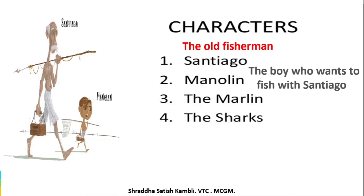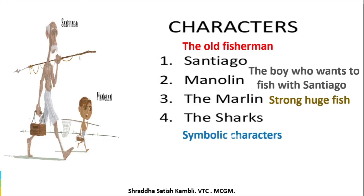Now who is Marlin? Marlin is nothing but a big, strong, huge kind of fish. And finally there are the sharks. Now the sharks here are symbolic characters — they are the ones who try to keep you away from your goal, who try to destroy you basically. So when you are trying to move towards your goal, when you are trying to work hard towards succeeding, these particular sharks will try to pull you back. So these are some symbolic characters in the lesson.